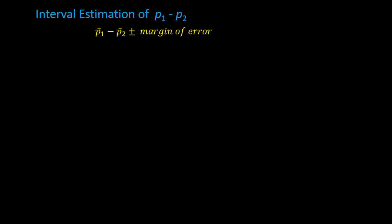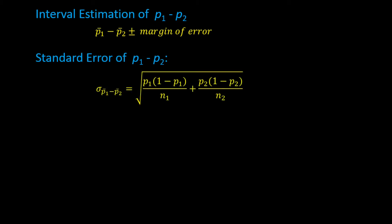The general formula for interval estimation is always a point estimate plus and minus some margin of error. The point estimate is p̄₁ minus p̄₂, and then to get the interval we add and subtract a margin of error. To calculate the margin of error, we first need to calculate the standard error of p₁ minus p₂, which is the square root of p₁ times (1 minus p₁) over n₁, plus p₂ times (1 minus p₂) over n₂. The standard error notation is sigma subscript p̄₁ minus p̄₂.